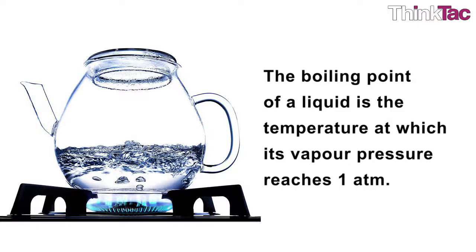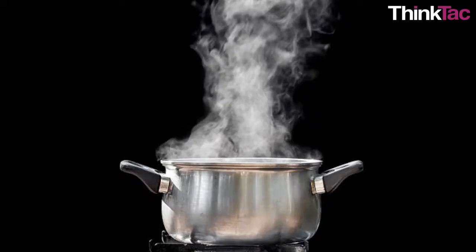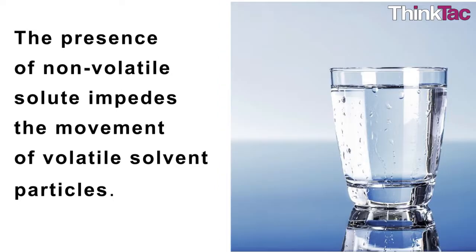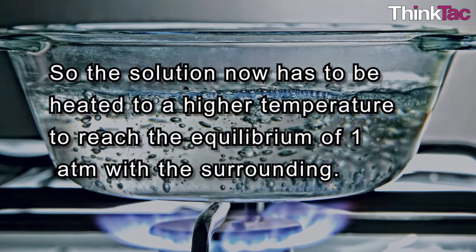The boiling point of a liquid is the temperature at which its vapor pressure reaches one atmosphere. If we add a solute, it becomes a solution and the boiling point of a solution is always higher than that of the solvent. The reason is that the presence of non-volatile solute impedes the movement of volatile solvent particles, reducing the vapor pressure of the solution compared to the solvent. So the solution now has to be heated to a higher temperature to reach the equilibrium of one atmosphere with the surrounding.